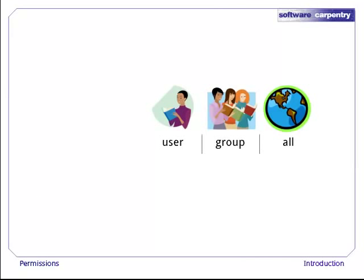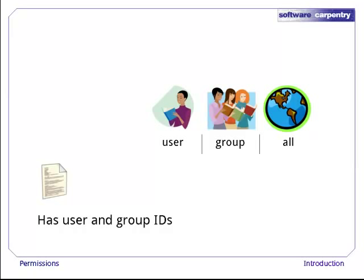The third part of the Unix user model is called all — everyone who isn't the user we're currently concerned with, or a member of any of the groups we're considering. Now let's look at files and directories. Each file stores the user ID of its owner, and the group ID of its owning group as well.